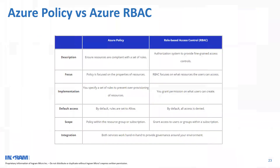The next difference to cover is Azure Policy versus RBAC. Conditional access is triggered based on how a user signs in, but Azure Policy is based on how a resource is created or running. For example, within a subscription you might not want your IT team to create G-series or H-series virtual machines — you want to restrict them. That is where you implement Azure Policy. Azure Policy basically ensures that resources being created or already created follow a certain set of rules and regulations.